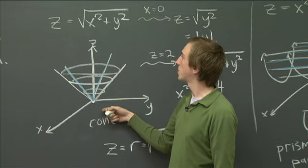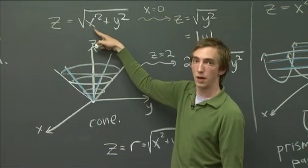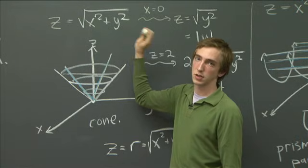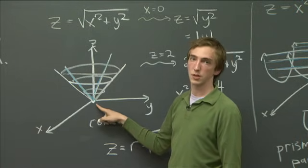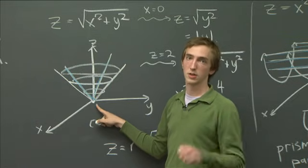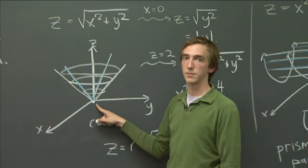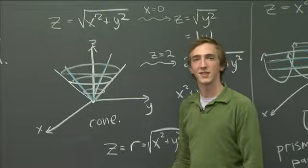So we can always expect that if the dependence of z on the variables x and y, if you can actually just rewrite that as a dependence on r, then you'll get this nice radial symmetry, just like we had translational symmetry for the prism. And I think I'll leave it at that.